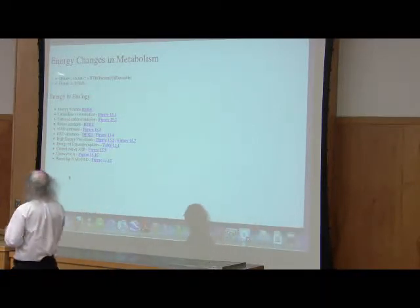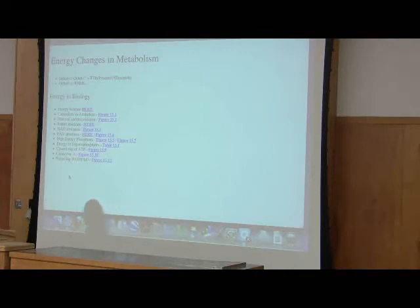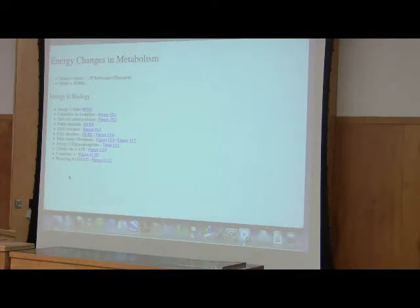If I have this reaction where the delta G zero prime is very negative, what can I say about this reaction? Well, you probably won't know off the top of your head, so I'll tell you. Let's think about this: we start with this being very negative, and we start with products equaling reactants.